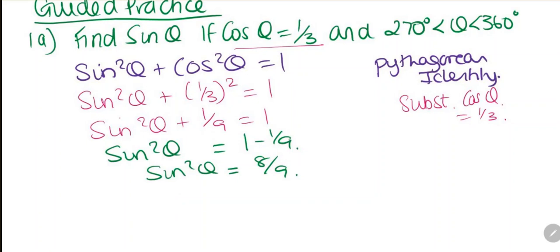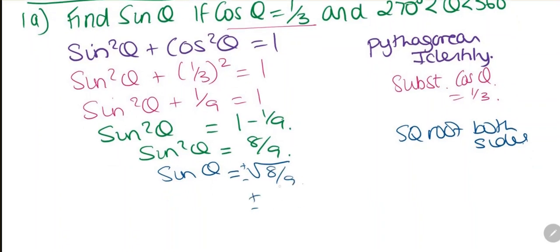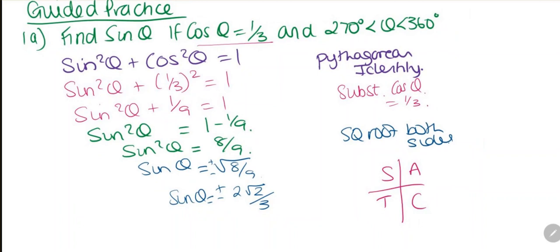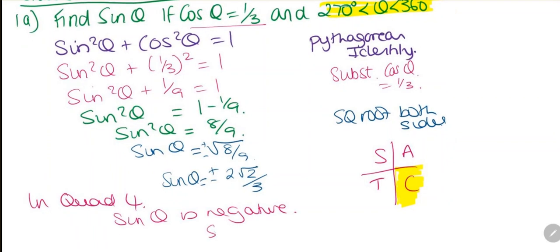Taking the square root of both sides, sine theta equals plus or minus root 8 over 9, which simplifies to plus or minus 2 root 2 over 3. Now looking at our quadrant: 270 to 360 is quadrant 4. In quadrant 4, sine theta is negative. So the answer is minus 2 root 2 over 3.